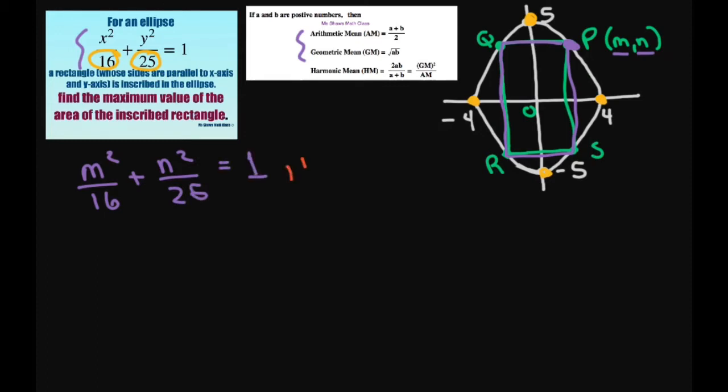That means my m squared is going to be positive and my n squared is going to also be positive. Now by using this relationship, what I can do is I can take my m squared divided by 16 plus n squared divided by 25 and that means it's going to be greater than or equal to,